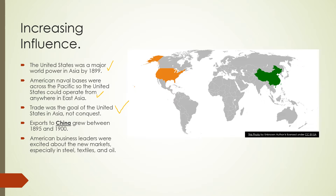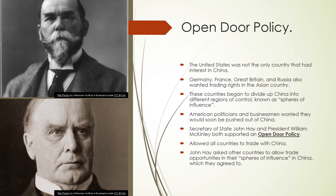One of the big areas was China, and exports to China grew between 1895 and 1900. Many Chinese did not buy American products, but the United States was still increasing its presence there. American business leaders were excited about the new markets, especially in steel, textiles, and oil. Here we can see the United States in orange — with Alaska up top — and China as the large green area, showing how they are related in world affairs.